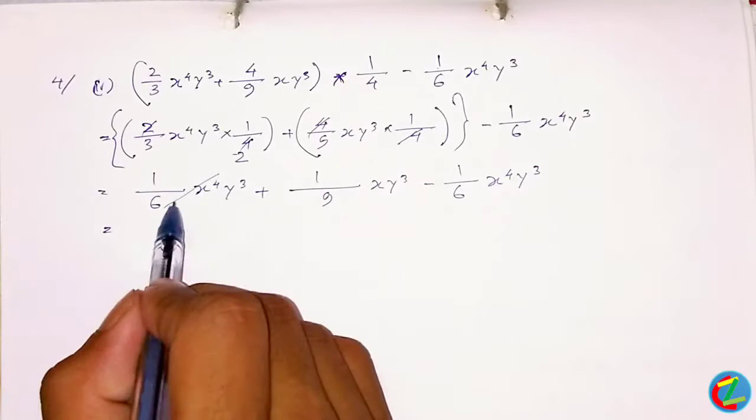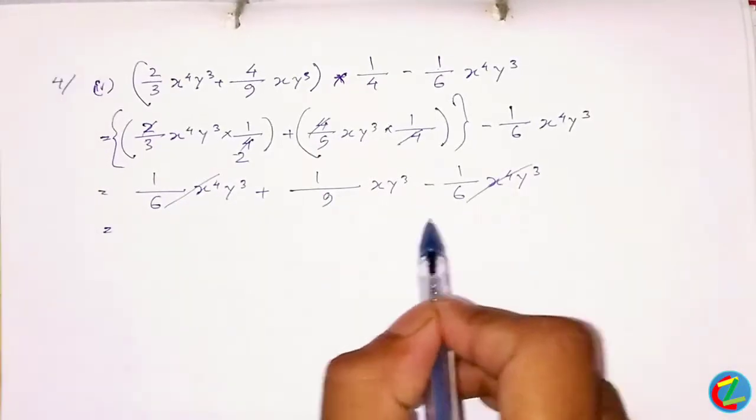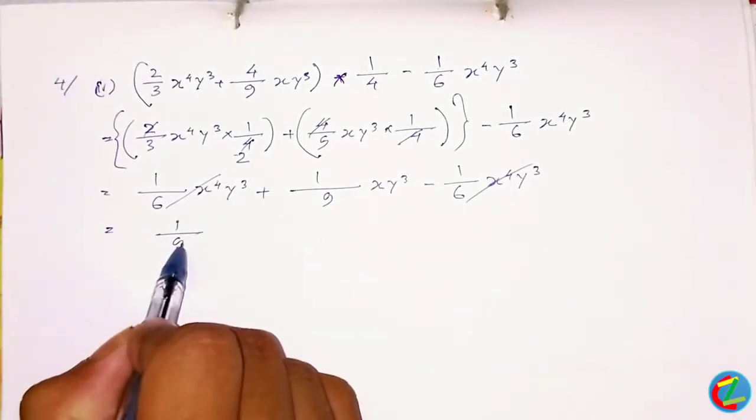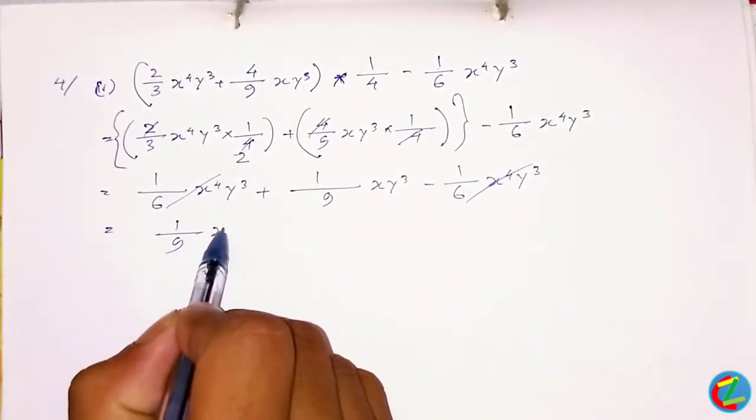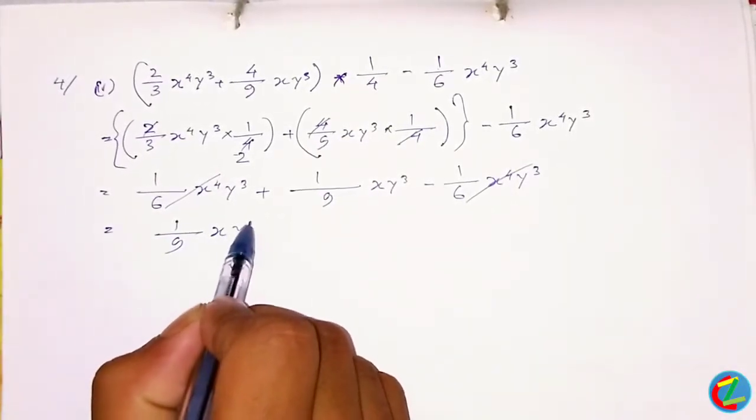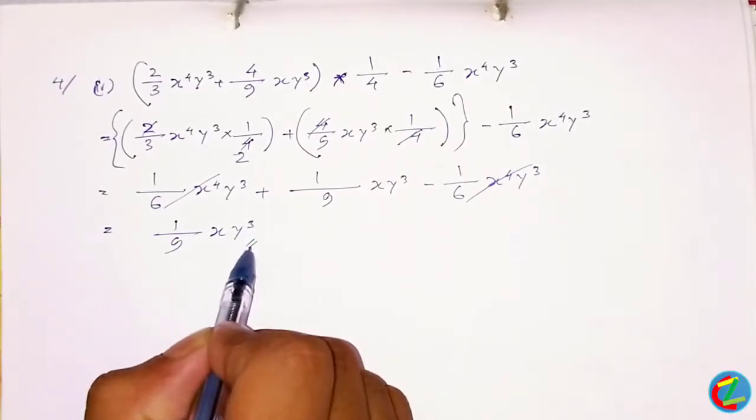Then we can add 1/9 x^(3/4) y^(2/3). We are ready to see the answer to the next numbers.